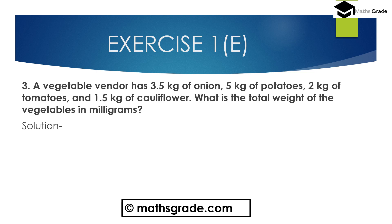Question number 3: A vegetable vendor has 3.5 kg of onion, 5 kg of potatoes, 2 kg of tomatoes, and 1.5 kg of cauliflower. What is the total weight of the vegetables in milligrams? So the weight of onion is 3.5 kg.